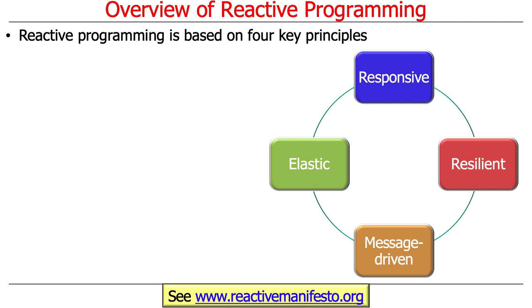There are four key principles in reactive programming. If you want to learn more, take a look at the reactive manifesto. These days, if you want to make your mark, you have to have a manifesto — we had the communist manifesto, the GNU manifesto, and now the reactive manifesto. Things like "go-to considered harmful" or "singleton pattern considered harmful" are other examples of ways to capture people's attention.